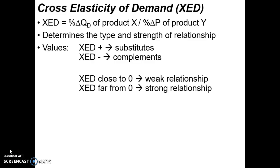Elasticity 2. Cross-elasticity of demand looks at how the percent change in the quantity demanded of one product responds to the percent change in price of another product. We can use this to determine the type of relationship and the strength of the relationship.